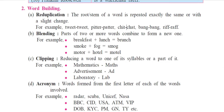The second word formation process is blending. Blending means parts of two or more words are combined to form a new word. For example: breakfast plus lunch becomes 'brunch,' smoke plus fog becomes 'smog,' and motor plus hotel becomes 'motel.'